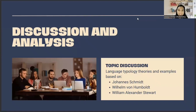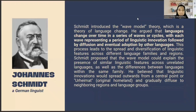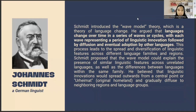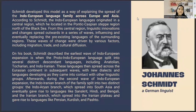The first figure we will discuss is Johanna Smith, who was a German linguist known for his comparative approach to the study of languages. Smith introduced the wave model theory, a theory of language change. He argued that languages change over time in a series of waves or cycles, with each wave representing a period of linguistic innovation followed by diffusion and eventual adoption by other languages. This process leads to the spread and diversification of linguistic features across different language families and regions.